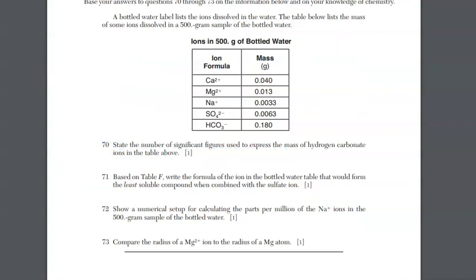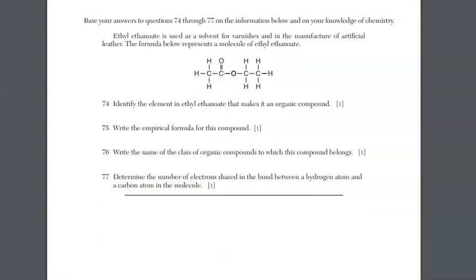For 73, we are going to look at comparing the radius of the magnesium 2+ ion with the radius of a magnesium atom. Magnesium is a metal. Metals lose electrons. That's why it's 2+. The radius of a magnesium ion is going to be smaller than the radius of a magnesium atom. And that goes for any metal ion.